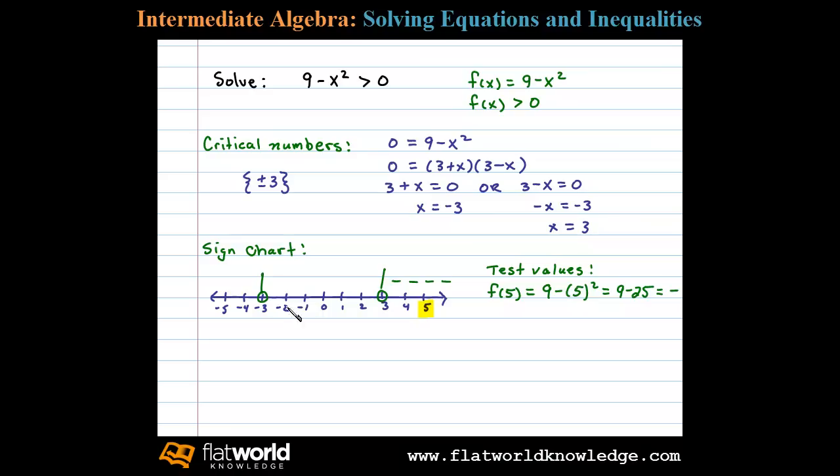Next, let's choose a test value in this middle region. I'm going to choose 0 in this case and test that, so f(0) will be 9 minus 0 squared, which is 9, and the result there of course is positive. Any test value you choose will result in a positive number, so I'll indicate that with pluses in that middle region.